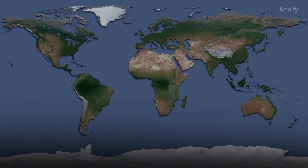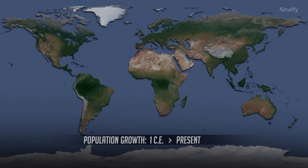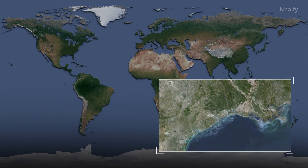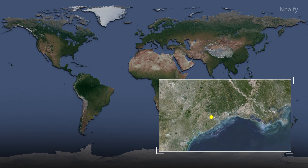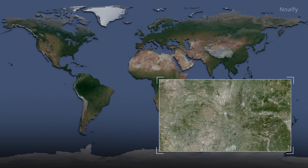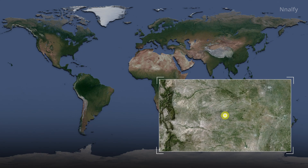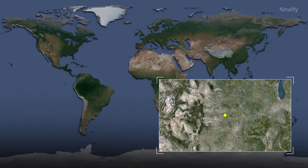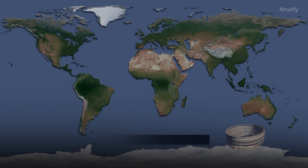On this map, we'll show population growth from the year 1 CE to the present and project our growth into the year 2050. Population concentrations will be indicated by dots, each of which will represent 1 million people. In areas where people are spread out and don't live in concentrations of 1 million, dots are placed in the middle of their approximate range. Historical references will be provided by images and text at the bottom of the screen.